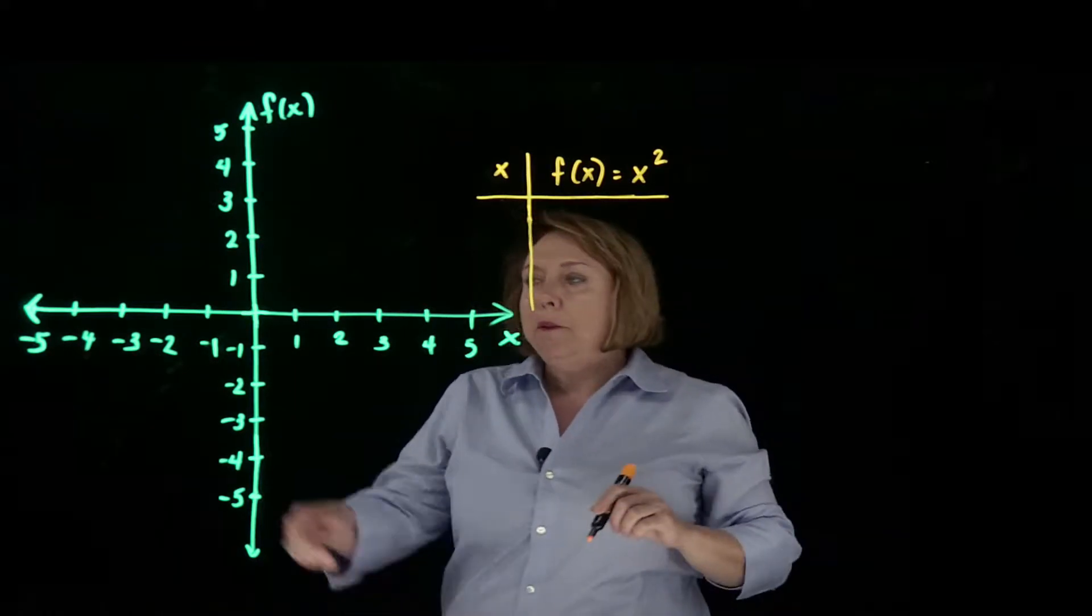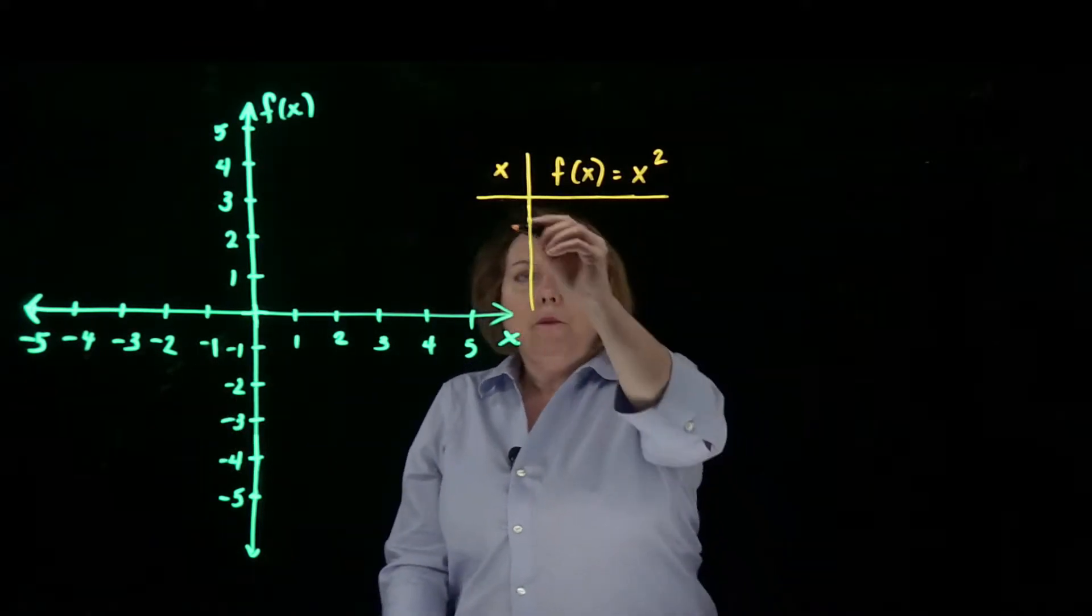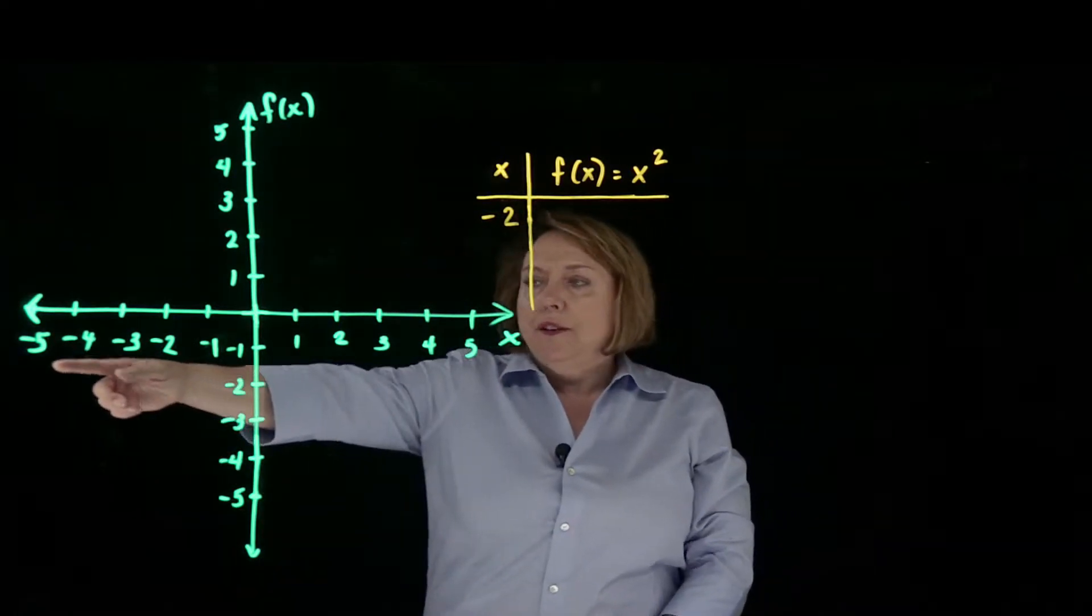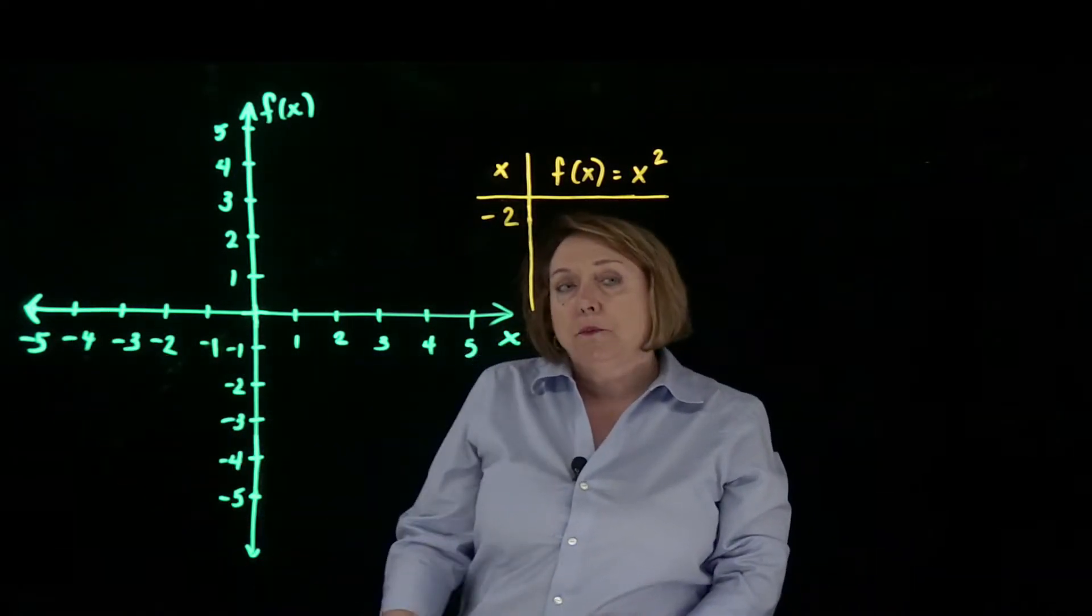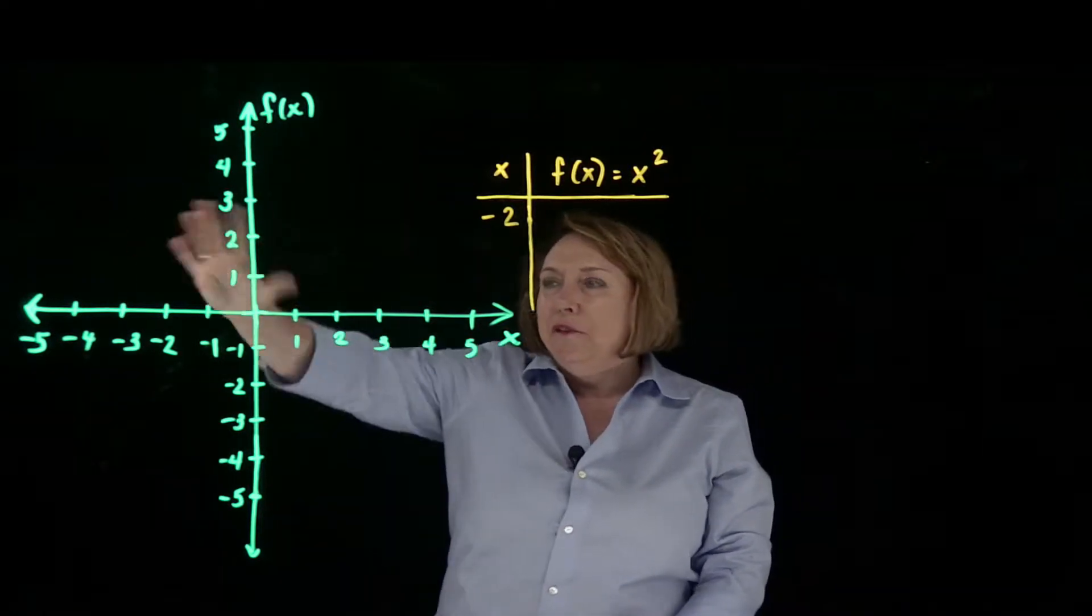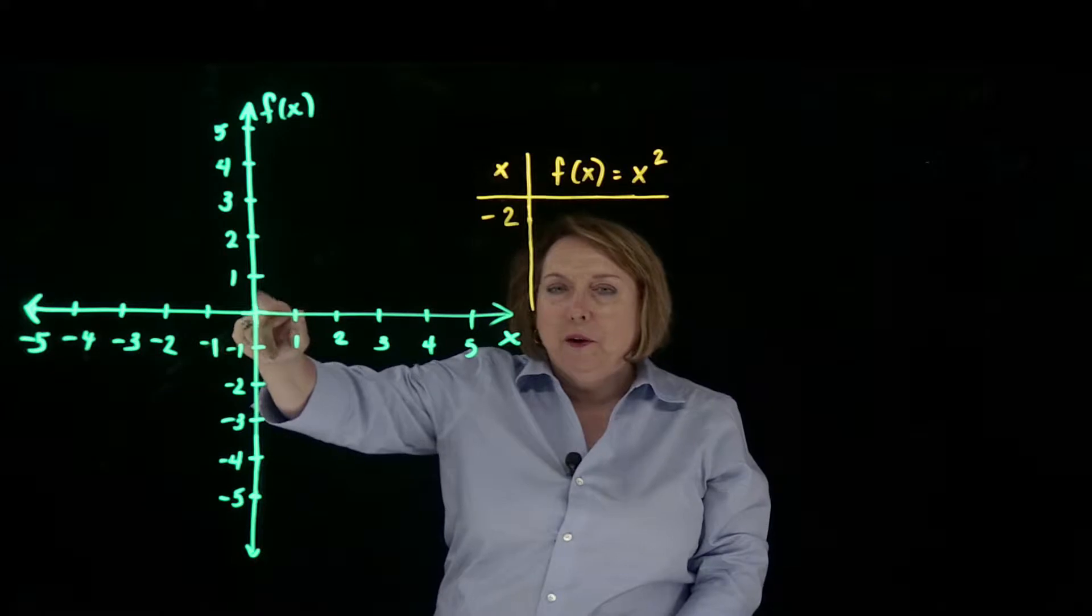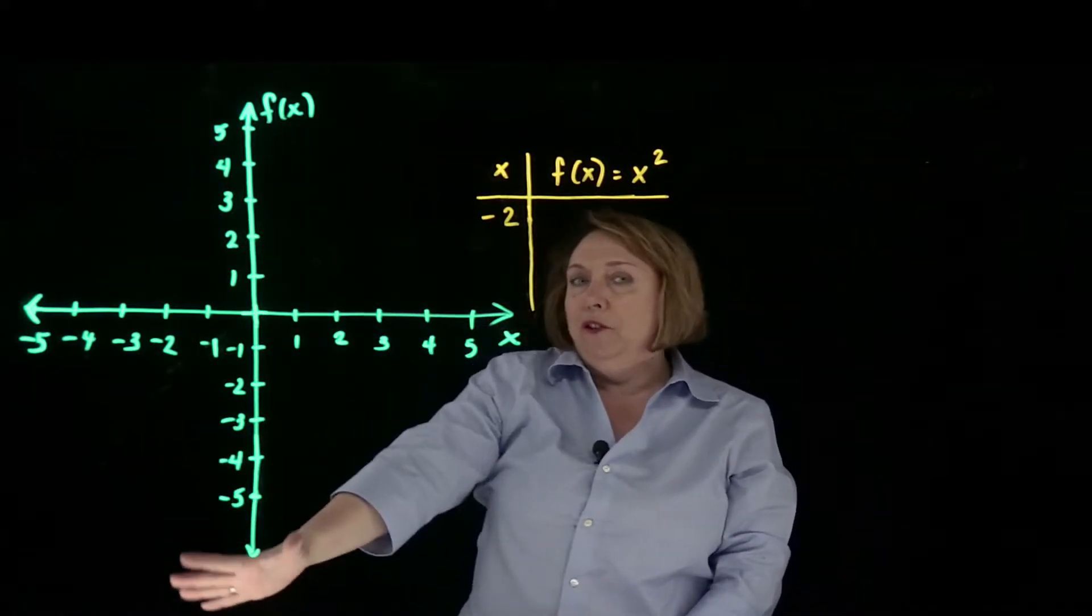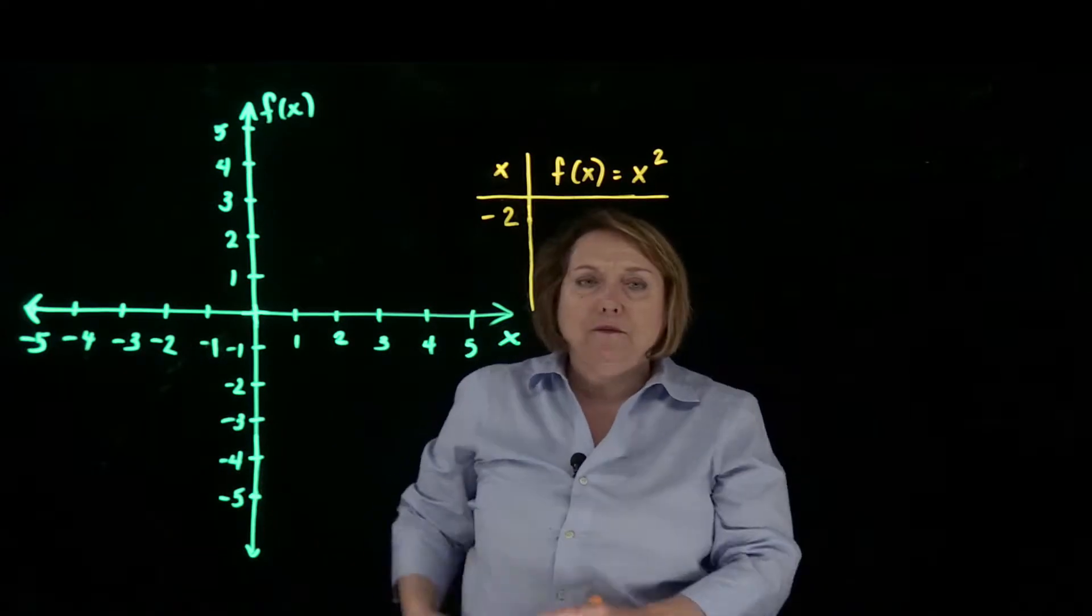So once again, let me choose a negative value. I'm going to choose x equals negative 2. I could have chosen any of these negative numbers or even something smaller than negative 5. The problem with that is that the farther you get away from the center, from the origin, the higher up your y is going to be, or maybe too low, and it's going to be off of my graph.